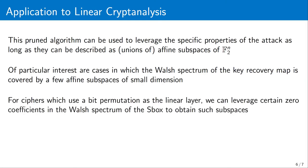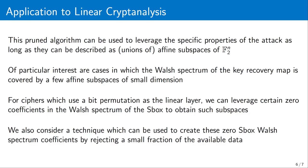We study this type of property for ciphers using bit permutations as linear layers, and find that such structures appear when certain Walsh coefficients of the s-box are equal to zero. We also show that we can effectively set this Walsh coefficient to zero by rejecting a small fraction of the plaintext ciphertext pairs.